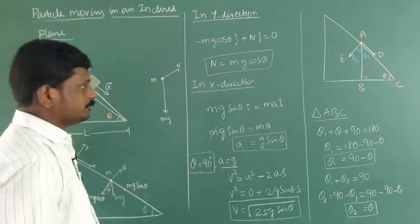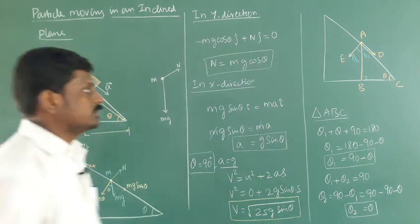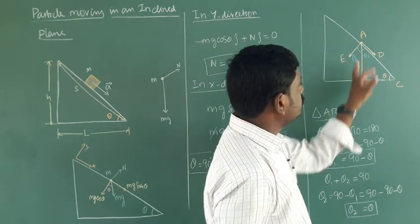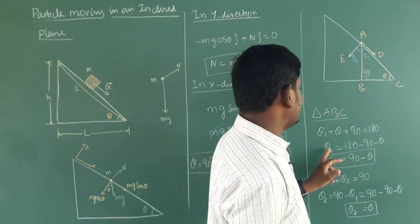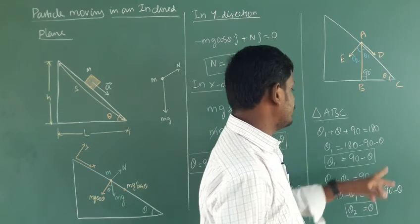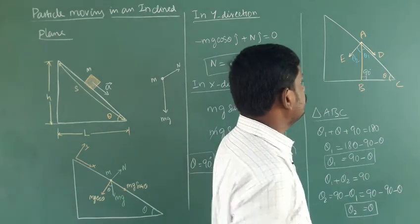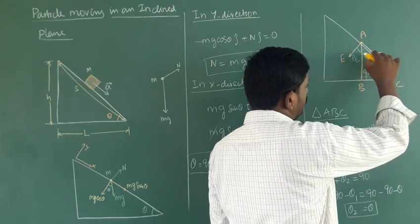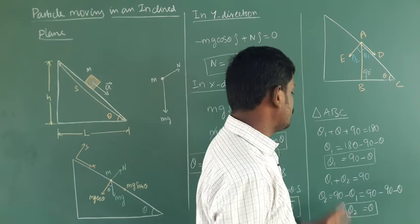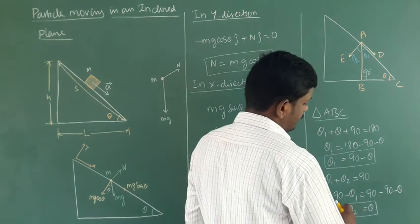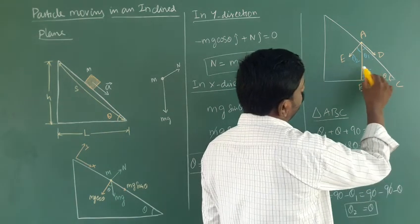Now we verify that the angle made by the gravitational force with the perpendicular to the surface equals the angle of inclination theta. Looking at triangle ABC, the sum of angles is 180 degrees: theta 1 plus 90 plus theta equals 180, giving theta 1 equals 90 minus theta. Then since theta 1 plus theta 2 equals 90, we get theta 2 equals 90 minus theta 1 equals 90 minus (90 minus theta), so theta 2 equals theta. This confirms the decomposition used.